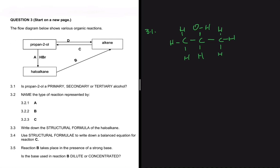Now I want you to realize something. This carbon, the second carbon, is bonded to OH as you can see. But then at the same time, is bonded to two other carbons. So that makes propane-2-ol a secondary alcohol. So 3.1, we have secondary alcohol.